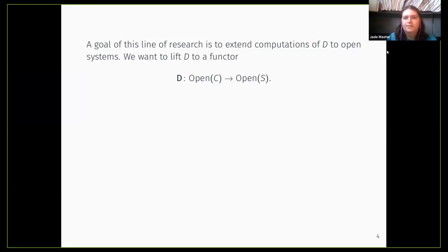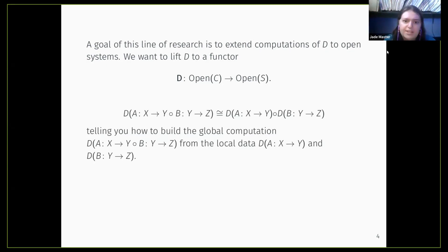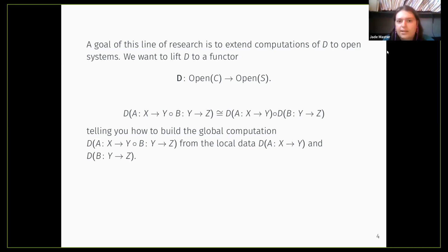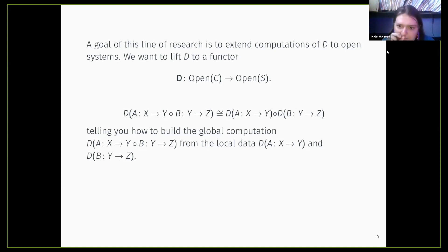One of the goals is to lift the computations of D to functors — a functor from the bicategory of open Cs to the bicategory of open Ss, where S is the semantics category where D of A lives. The reason is that functoriality says F of G composed with F equals F of G composed with F of F. In this context, this corresponds to an isomorphism between the data computed on a larger composite open network and the composite of data computed on each component. This tells you how to build up a global computation using smaller local data, where the local data is D of A and D of B as open networks from X to Y and Y to Z.